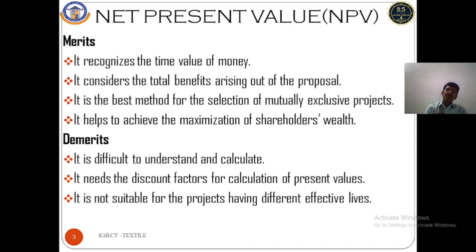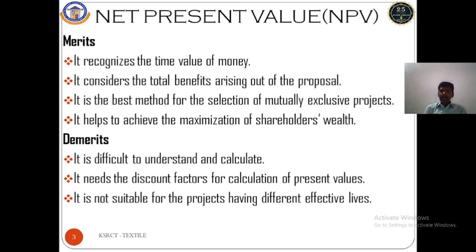Another demerit is that it needs a discount factor for calculation of present values — only based on discount factors can we predict the present value of cash flows. For even cash flow and uneven cash flow methods there are different formulas and different tables, which adds difficulty. Also, NPV is not suitable for projects having different effective lives — if two projects have different effective lives, it will not be suitable.